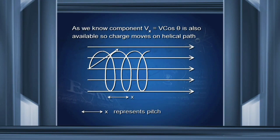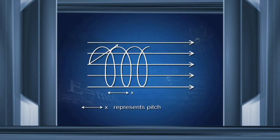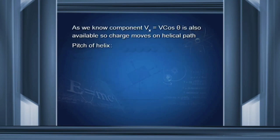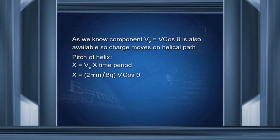As the component Vx equals V cos theta is also available, the charge moves in the forward direction under velocity Vx, and because of the force F the charge also moves in a circular path. Under the combined action, the charge goes on a helical path, as clearly represented in the diagram. The pitch of the helix x equals velocity along x-axis into time taken to complete a round. Since Vx equals V cos theta and T equals 2πm upon BQ, we get pitch x equals 2πm divided by BQ into V cos theta.